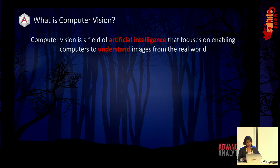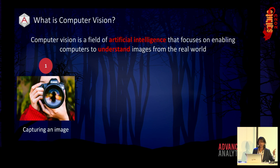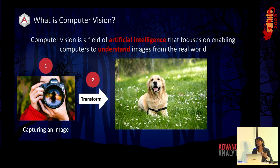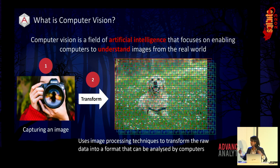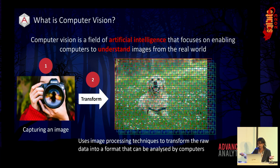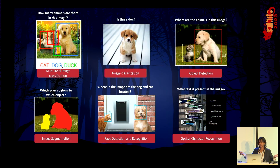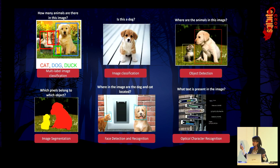Before we get into the fun part, I just wanted to touch on computer vision — what is computer vision? It's a field of artificial intelligence that essentially tells computers how to understand images from the real world. First step is acquiring your images, then uploading them and getting the computer to understand an image. It draws several grids on your image, then uses image processing techniques, assigning RGB values of 0 to 255 to every little grid. Computer vision tasks include multi-label image classification, detection, face detection, recognition, and optical character recognition.